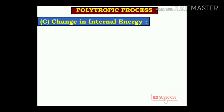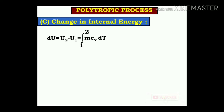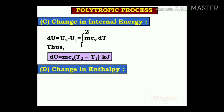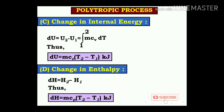Change in internal energy: dU = U2 − U1 = mCv × (T2 − T1) for process 1 to 2. This is the standard equation for internal energy. Change in enthalpy: ΔH = H2 − H1 = mCp × (T2 − T1) in kilojoules.